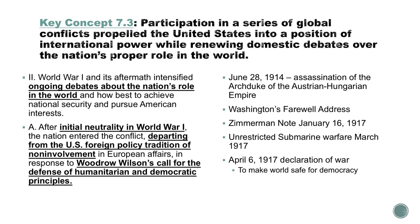It's this submarine warfare that Wilson thinks is barbaric. He finally decides on April 6, 1917, to ask for a declaration of war. At this point, this is America's fourth declaration of war — remember the War of 1812, the Mexican-American War, and the Spanish-American War. Now Wilson asks for a declaration of war on Germany. We're going to look at this very specifically in class: the reason becomes this humanitarian democratic principle.